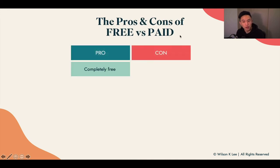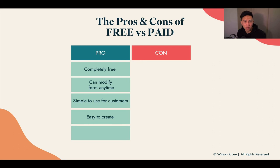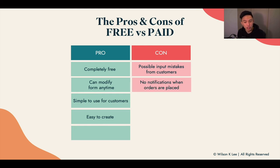Now the pros and cons of free versus paid, so you can make an informed decision. If you are using the free way, the pros are that it is completely free, you can modify the form anytime, it is easy to do so, it is simple for your customers to use, and it takes just minutes to create. However, the cons of using Google Forms versus a paid option include possible mistakes when customers are filling in information, there are no notifications when orders are placed — so you need to keep checking — and there's no inventory management, meaning you don't know what ingredients you have left.